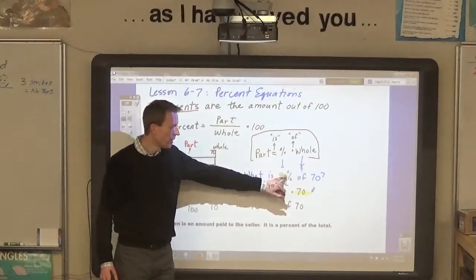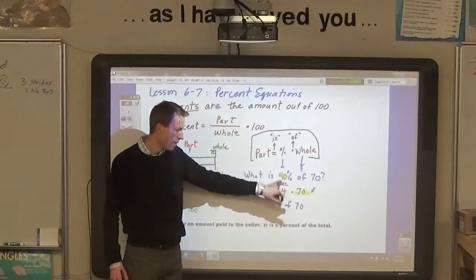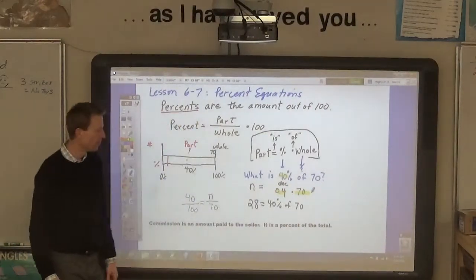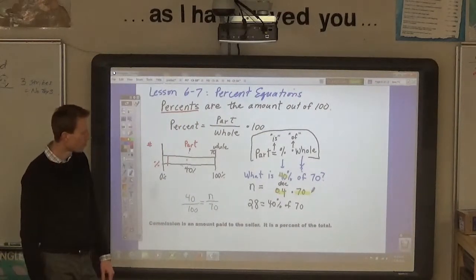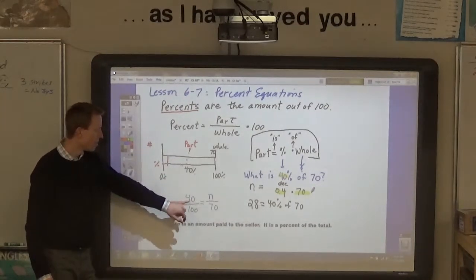So, 40% of 70 can be found by converting it to 0.4 and then multiplying it by 70. Or you can look at it this way: